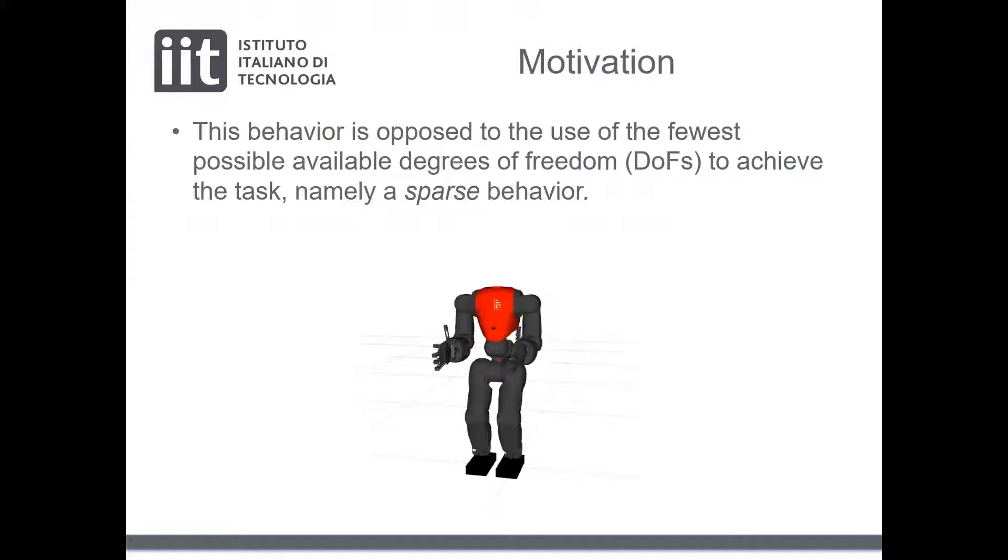Sparse motion generation permits to generate motion of the robot which employs the fewest number of degrees of freedom to achieve the desired task.